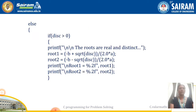If disc is greater than 0, the roots are real and distinct. So we have to calculate root1 and root2 separately. The formula uses -b plus or minus the square root of disc. For the first root we apply plus, and for the second root we apply minus. In that way, root1 and root2 are found and printed.